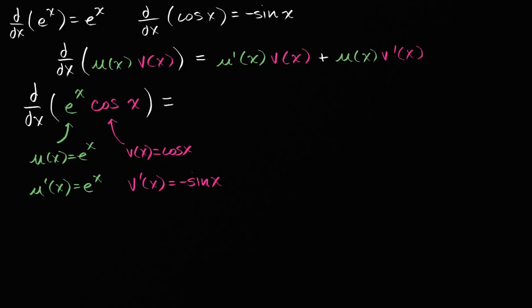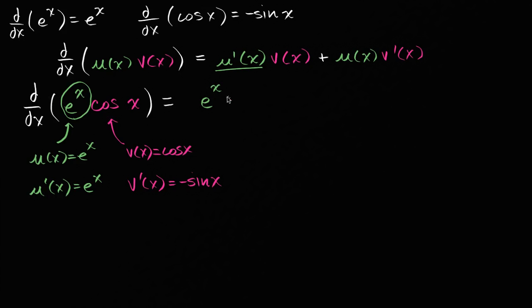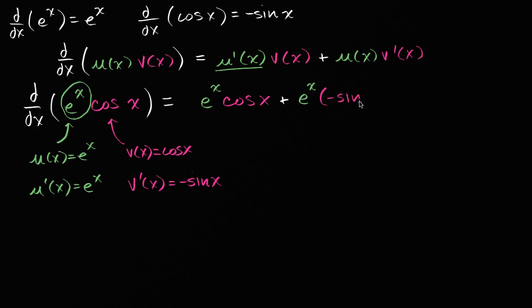So what's this going to be equal to? This is going to be equal to the derivative of the first expression — the derivative of e to the x, which is just e to the x — times the second expression, not taking its derivative, so times cosine of x, plus the first expression, not taking its derivative, so e to the x, times the derivative of the second expression, which is negative sine of x.